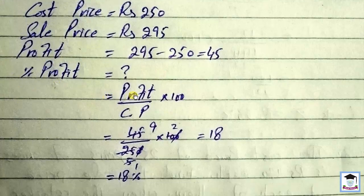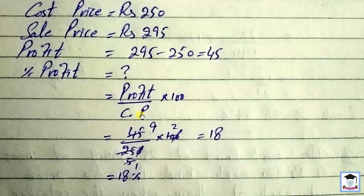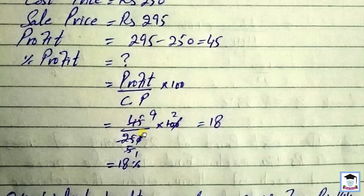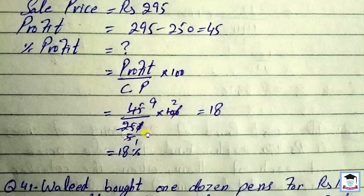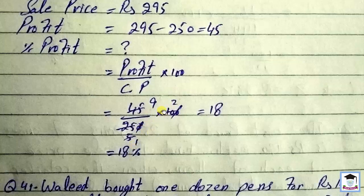Percentage profit: profit over cost price multiply by 100. So 45 over 250 times 100. Dividing 45 by 25 gives 9, then times 2 equals 18 percent profit.